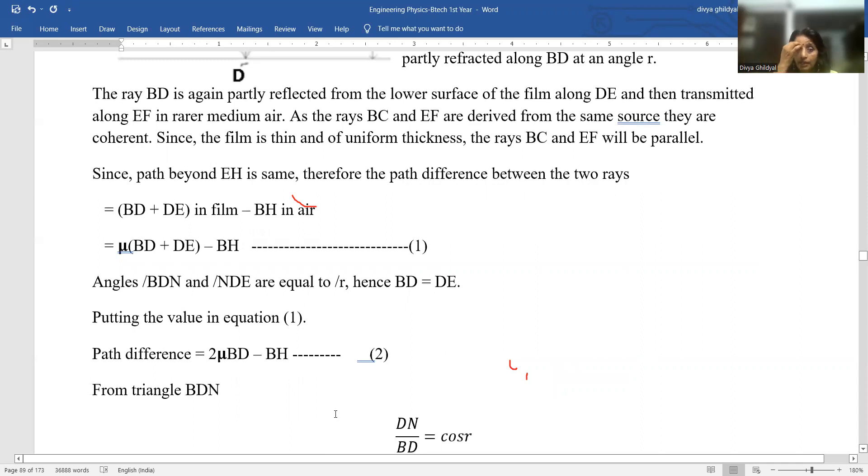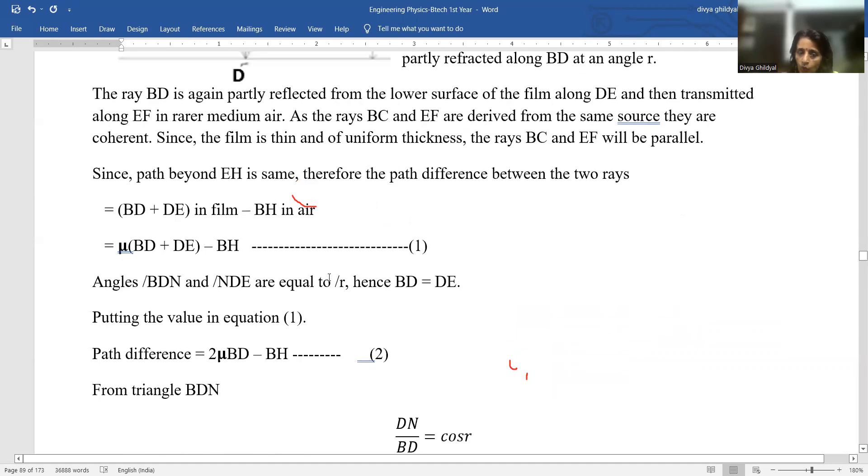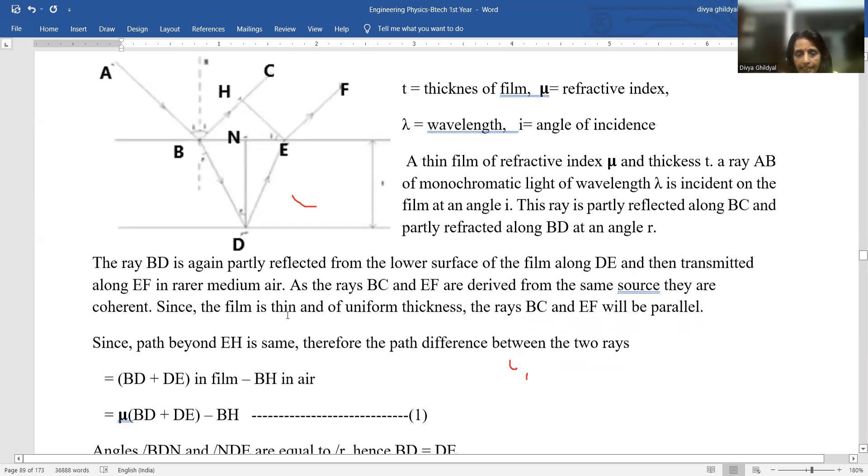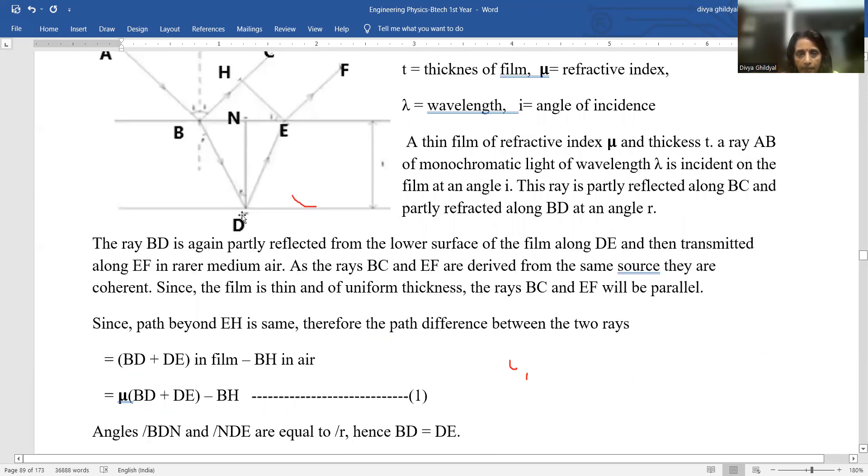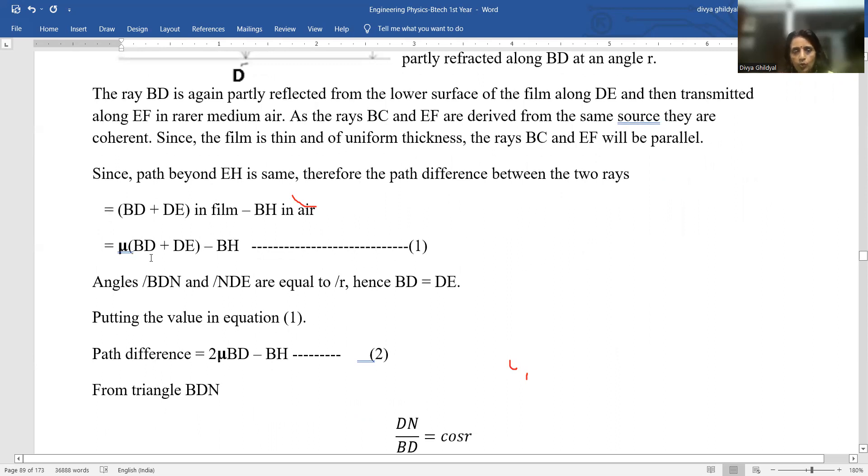So my path difference formula becomes mu times BD plus DE minus BH. Angles B, D, N and NDE from my simple laws of optics will be same equal to R. Hence, they are two congruent triangles with both angles same here, one side common. That is why my BD will become equal to DE because of these two congruent triangles. Now BD equal to DE, we will put it here in this expression. And what do we get? Path difference is equal to 2 mu BD minus BH.